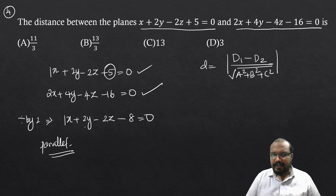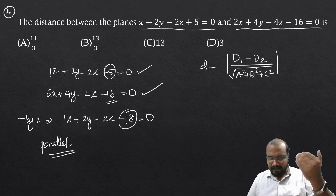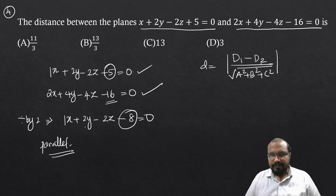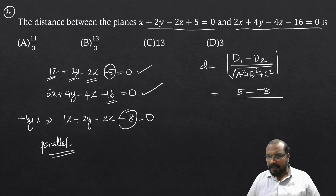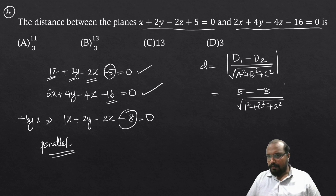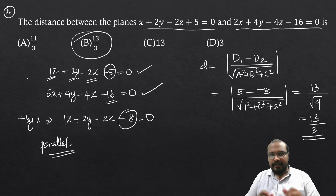We have d1 = 5, d2 = -8, A = 1, B = 2, C = -2. Distance = |5 - (-8)| divided by the square root of (1² + 2² + (-2)²) = 13 divided by the square root of 9 = 13 by 3. The answer is 13/3, option B.